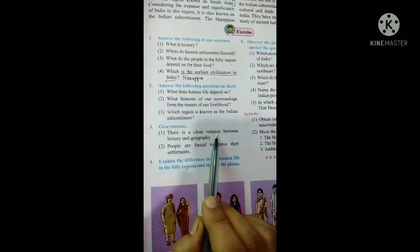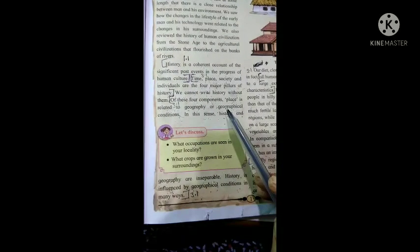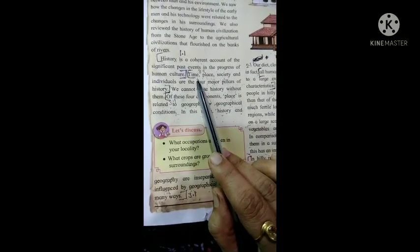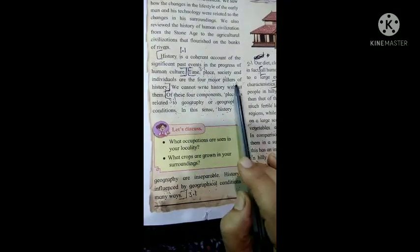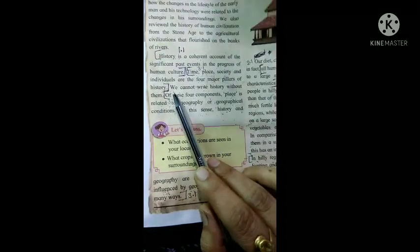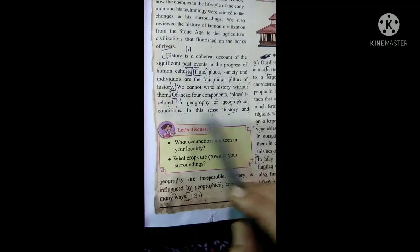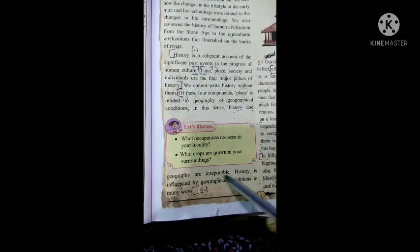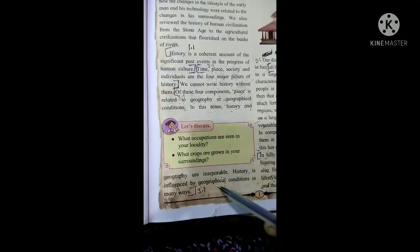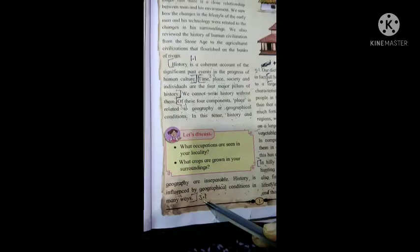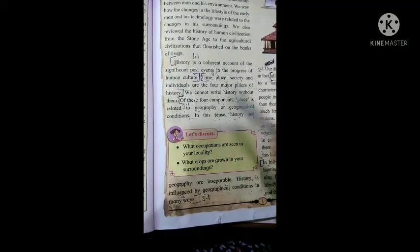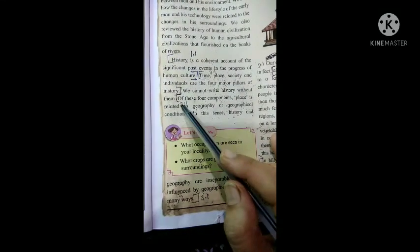Question 3: Give reasons. There is a close relation between history and geography. For this you will get answer here on page number 1. See, from here you have to start. Time, place, society and individuals are the four major pillars of history. Of these four components, place is related to geography and geographical conditions. In this sense, history and geography are inseparable. History is influenced by geographical conditions in many ways. Here you have to start.